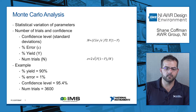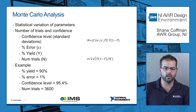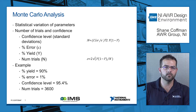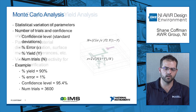A little bit more on Monte Carlo analysis. In Monte Carlo analysis, each parameter that's run during the yield analysis for each iteration will be the value that's representative of its actual statistical variation. It's also easy to compute the number of yield trials that it takes for a particular yield percentage with an acceptable error percentage for a particular confidence level. For example, if your yield is 90% and a 1% error in your results is acceptable and you want a confidence level of 95.4%, that would be 3600 yield trials.